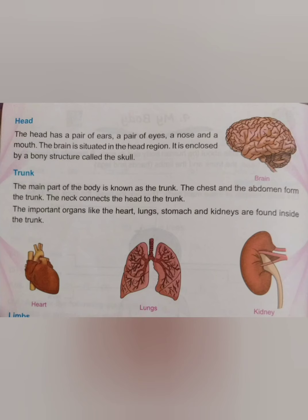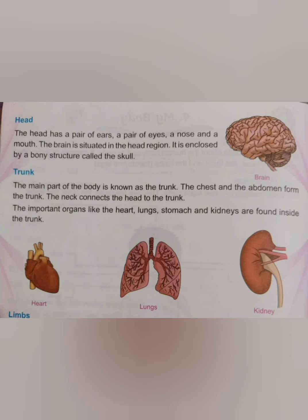Just check on your head — these body parts are there. Do you have two ears, two eyes, nose and mouth? Yes, it is there — all these things are there on your head. Your brain is situated in the head region. It is enclosed by the bony structure — we cannot see it with our eyes because it is enclosed by the bony structure, called the skull, which is the bone structure of the human or animal head.